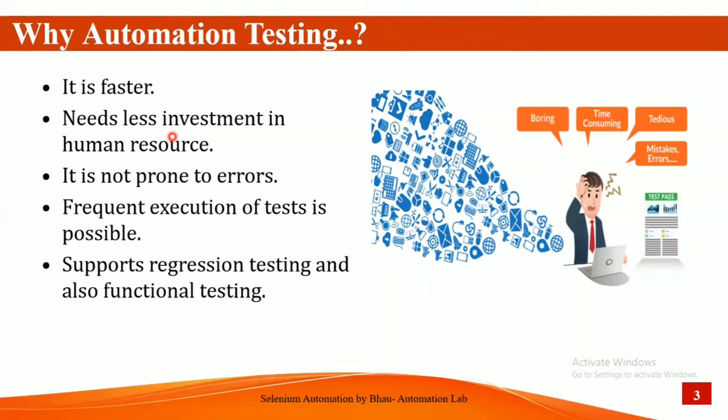With CI/CD jobs, you can schedule test cases at any time and execute five hundred or a thousand plus test cases in a single run. One manual tester can't execute more than 30 to 35 test cases, but if those test cases are automated, one person can run a thousand plus test cases in a single run.